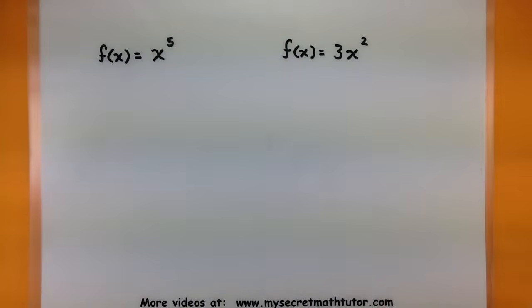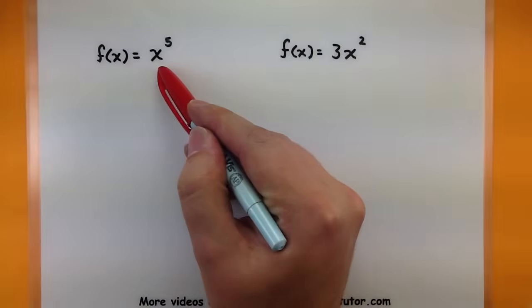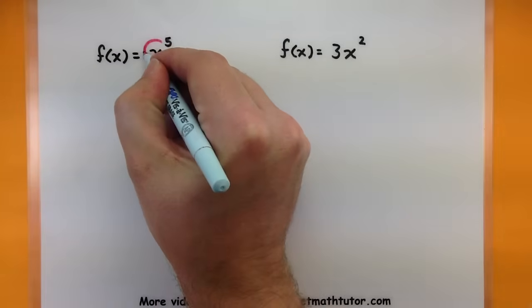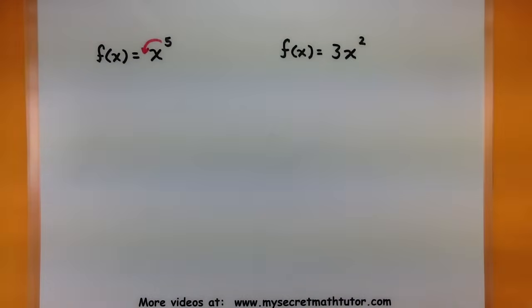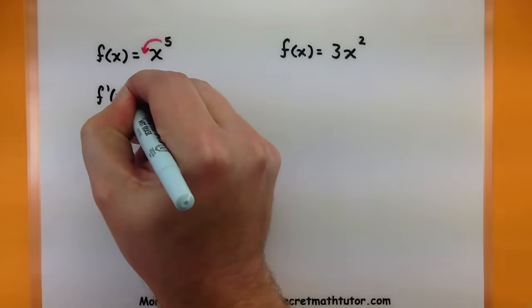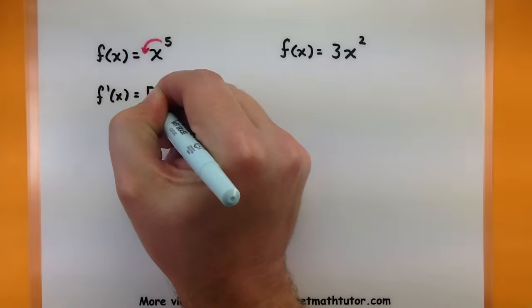Here's my first one: f(x) = x to the fifth power. That's exactly what I'm talking about. I have x raised to a number power. Simply take that power, drop it down immediately in front. So the derivative of f would equal 5x.